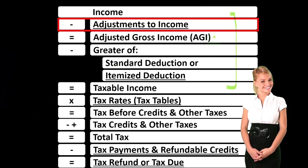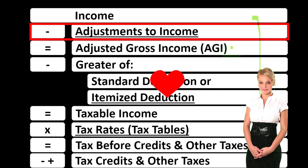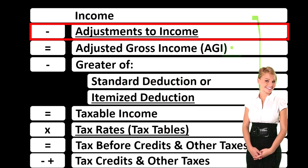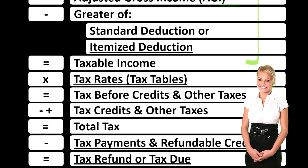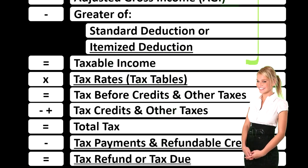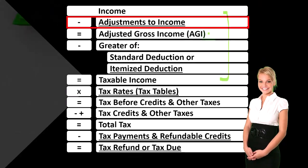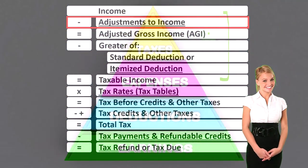That subtotal is adjusted gross income, which is an important number, because it's the one used when we apply phase-outs into the system — phasing out credits or deductions as income levels go up.